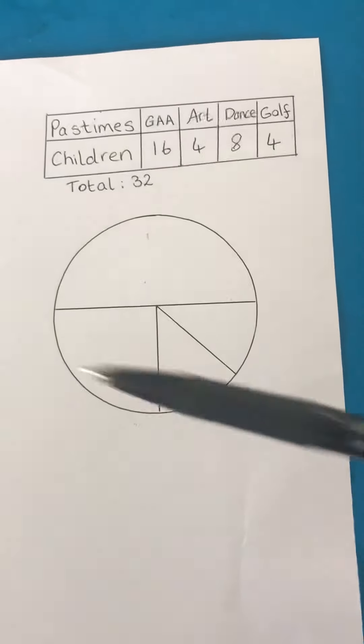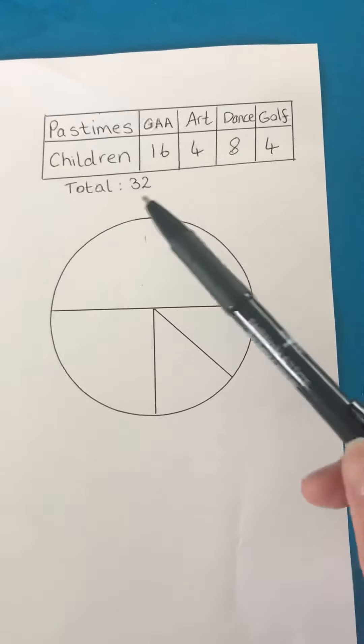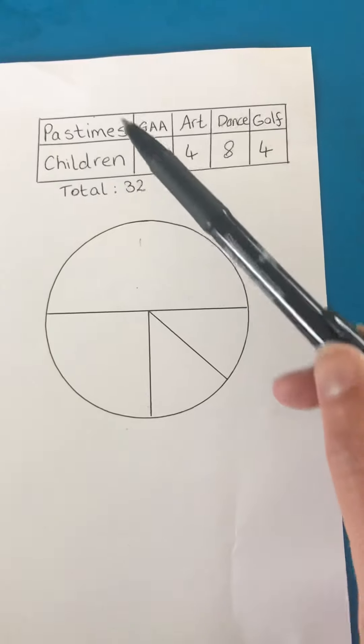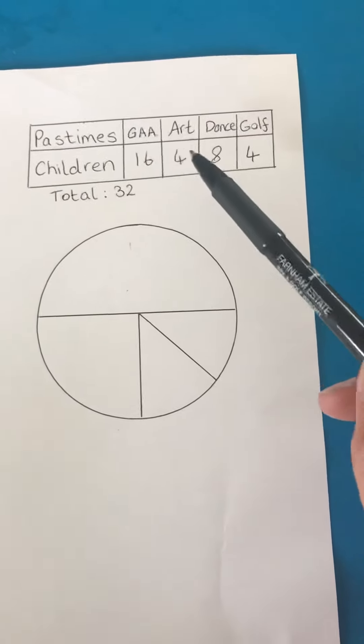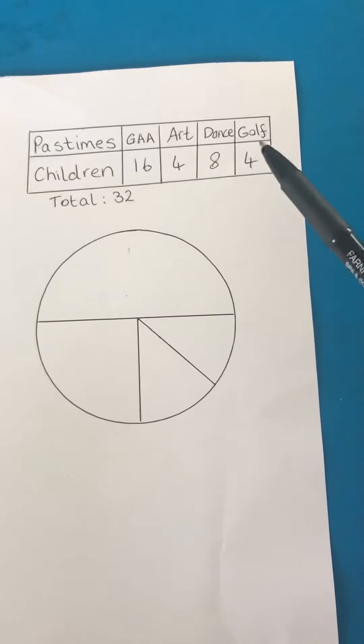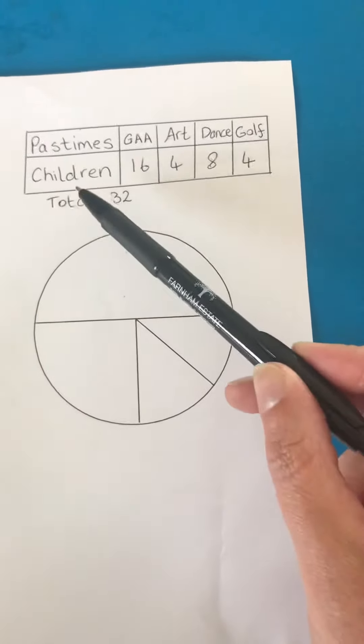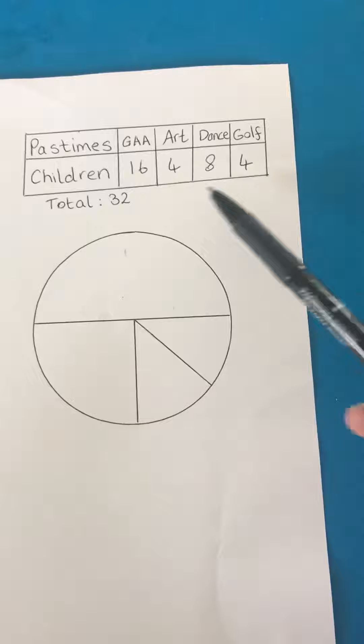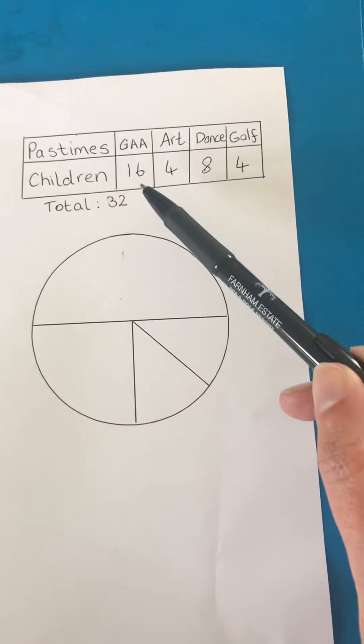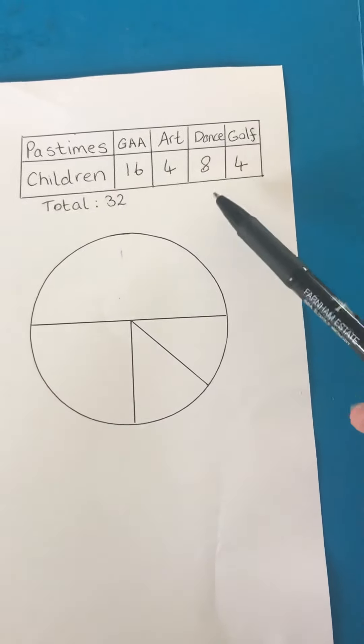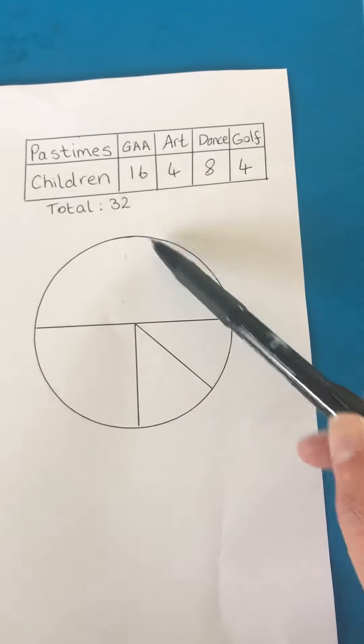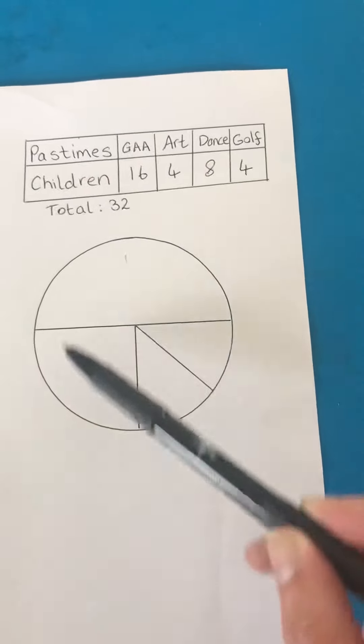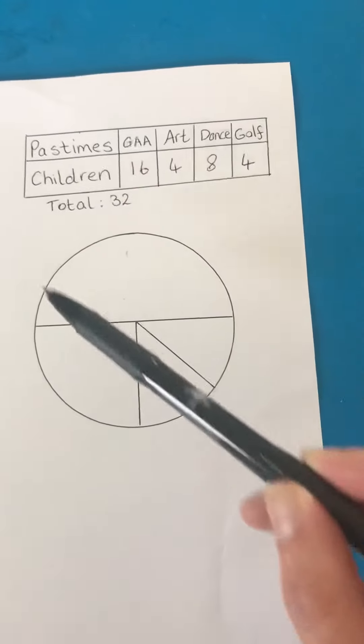I've come up with some information here at the top in the table. This table shows different pastimes the children do: GAA which is Gaelic, Art, Dance, and Golf, and these are the amount of children that do them. We've got 16 children do GAA, 4 do Art, 8 do Dance, and 4 do Golf. The total amount is 32, which means that the pie chart is representing 32 in total.